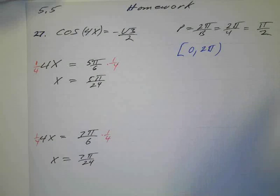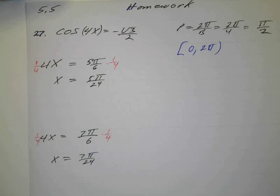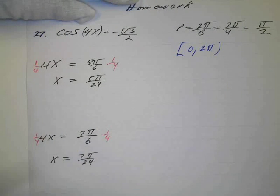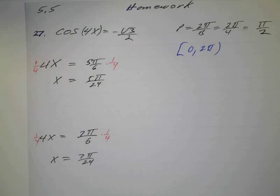Now, remember, intuitively, we thought we would have eight solutions, so we should have four here and four here. That's what it should work out to. So I've got this, and then let's add. So this is my first one, π over 24. So I'm going to keep everything in 24s and maybe reduce them at the end.